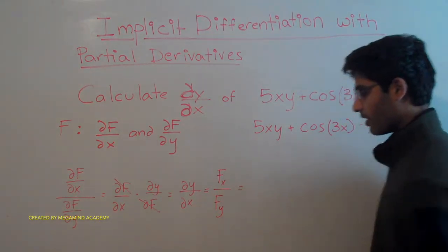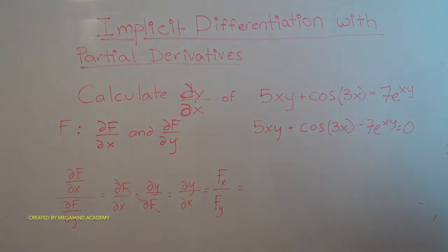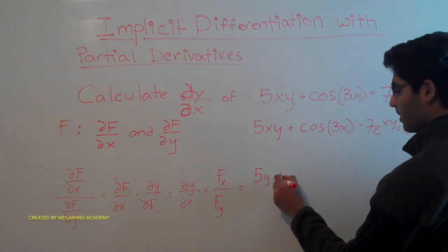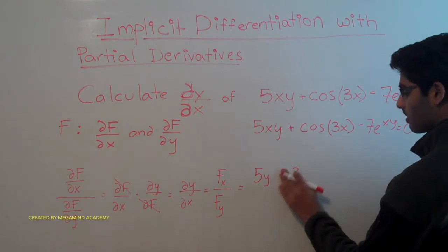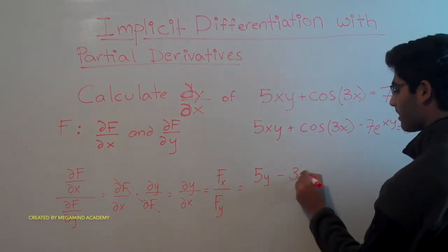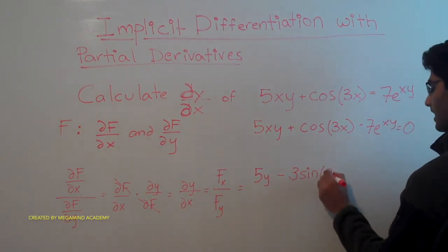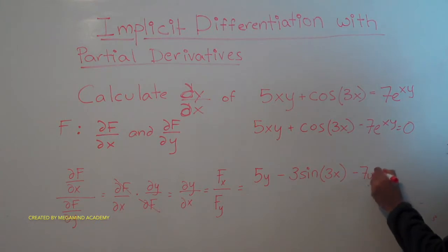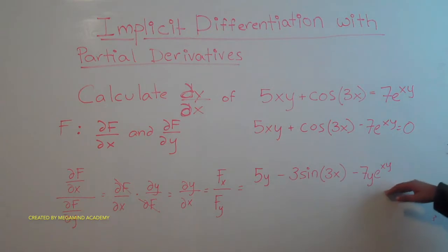So if we look for fx, the partial of f with respect to x, we're going to get 5y minus 3 sine of 3x minus 7y times e to the xy power. So that's the derivative with respect to x.